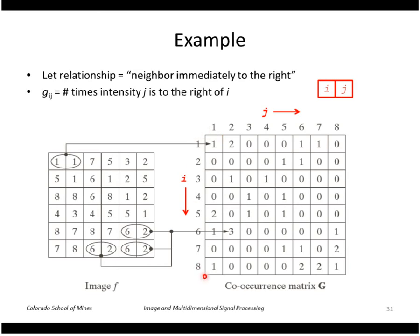The co-occurrence matrix lists the possible intensities across the top and down. I'll list I down this way and J across this way. Here, for example, we recorded three, meaning that intensity six was to the right of intensity two three times. Looking at the image, these are the three places where that resulted from.